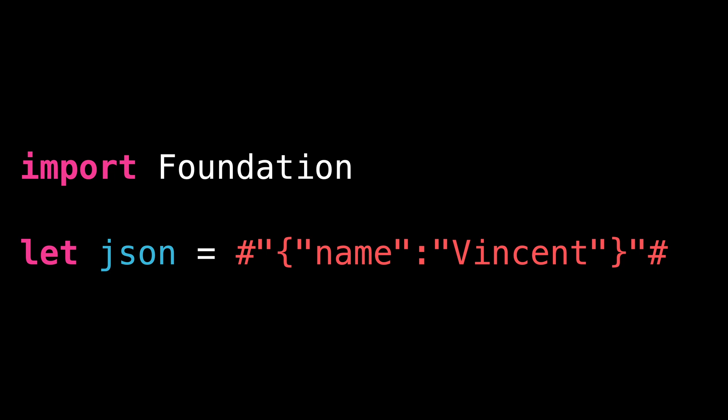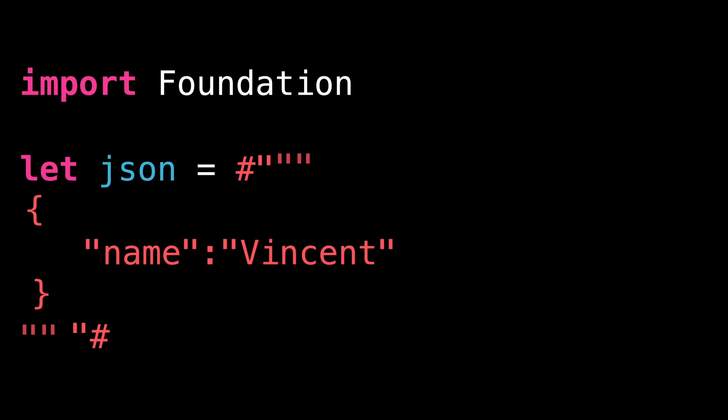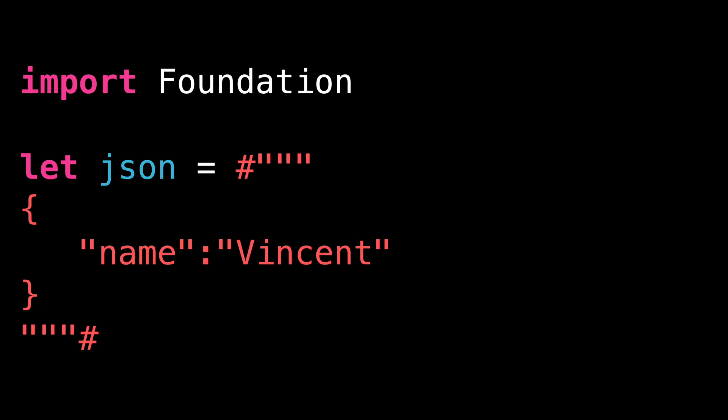Even better, raw strings can also be used along with multi-line strings, and the combination of the two is really powerful when you need to define large JSON data.